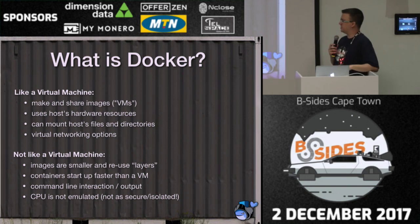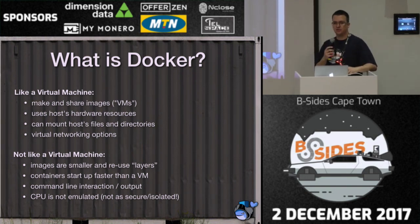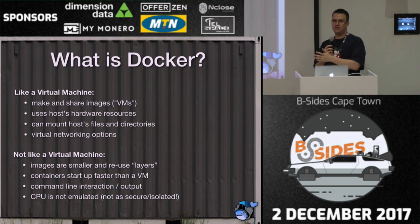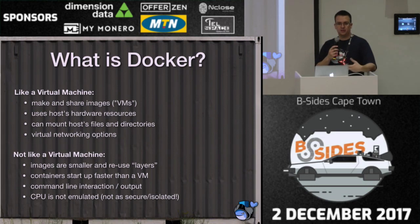Another nice feature is the command line interaction. Unlike Vagrant, you don't have to SSH into a Docker container to do things. You can actually pipe stuff in and out of it, run it in your command line, pipe the output, and then use your native operating system's tools to do other things. It feels a lot more native and the tools you're running are a lot more accessible and reusable.